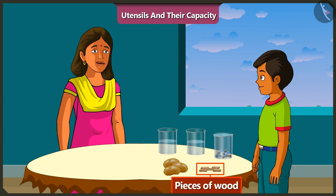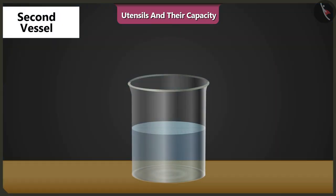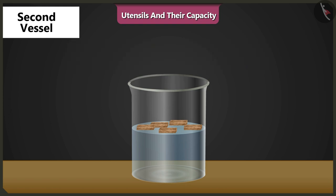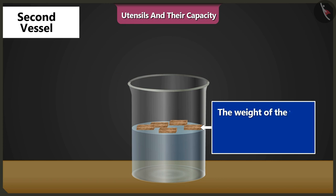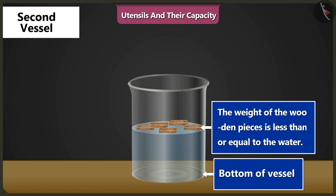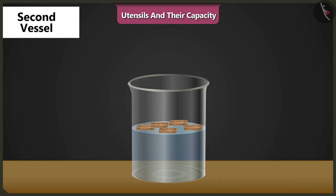Now put these pieces of wood in another vessel half filled with water. Why did the water not come up when we dropped in the wooden pieces? Because the weight of these pieces of wood is less than or equal to the weight of water in the vessel, so these pieces did not sink to the bottom of the vessel. This is why the water did not come up.